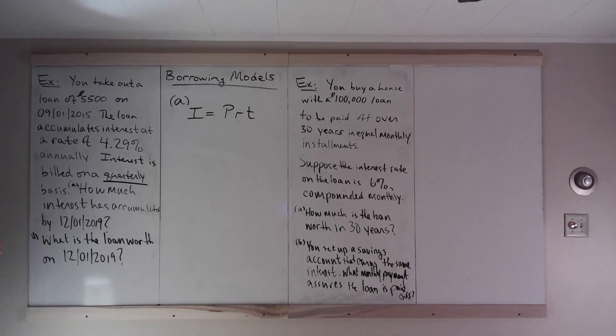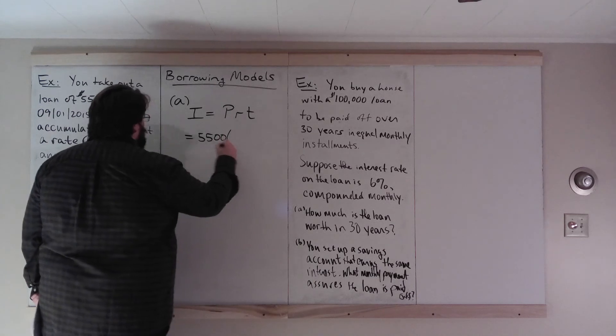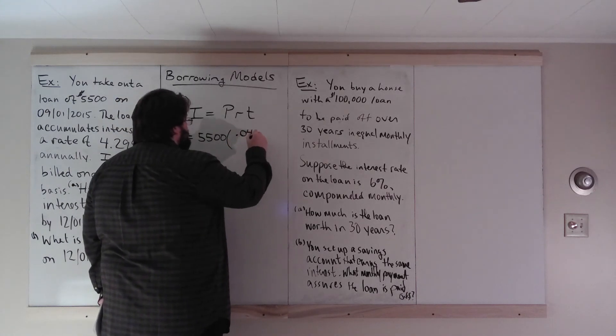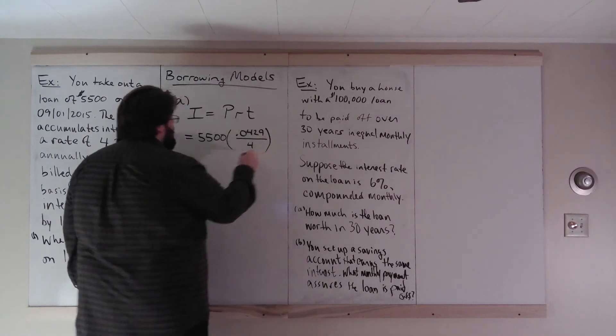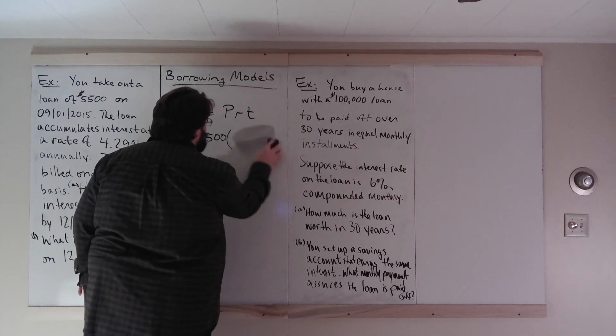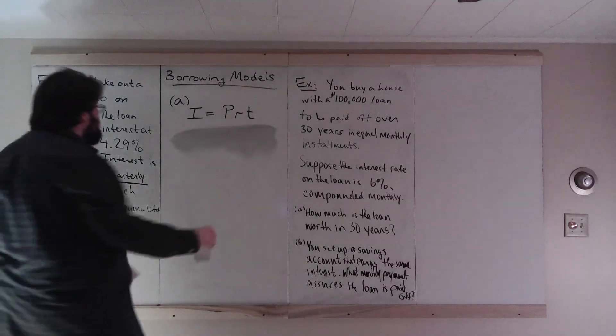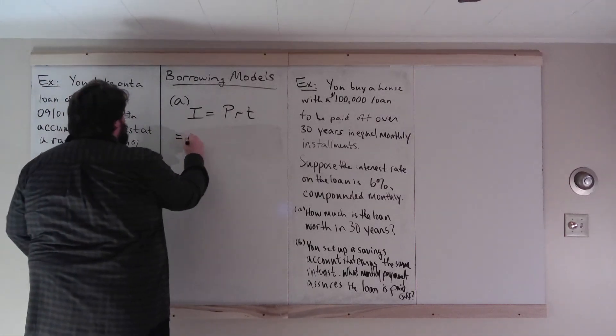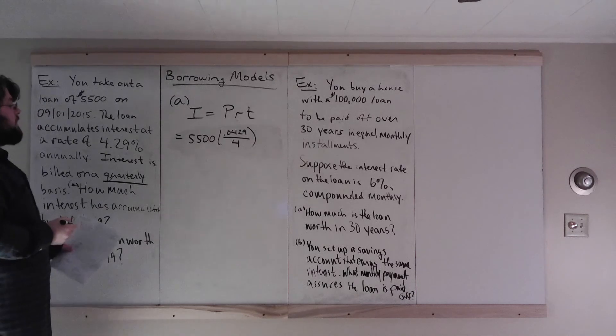5,500 is 5,500. Now, this I equals PRT. Well, let's just do it. So P is 5,500. R, what's R? 4.29% annually. So we have 0.0429. But remember, we want our units to be quarters. And there are four quarters in a year. So we have 5,500, 4.29% per year. So that's 0.0429 divided by 4 per quarter.